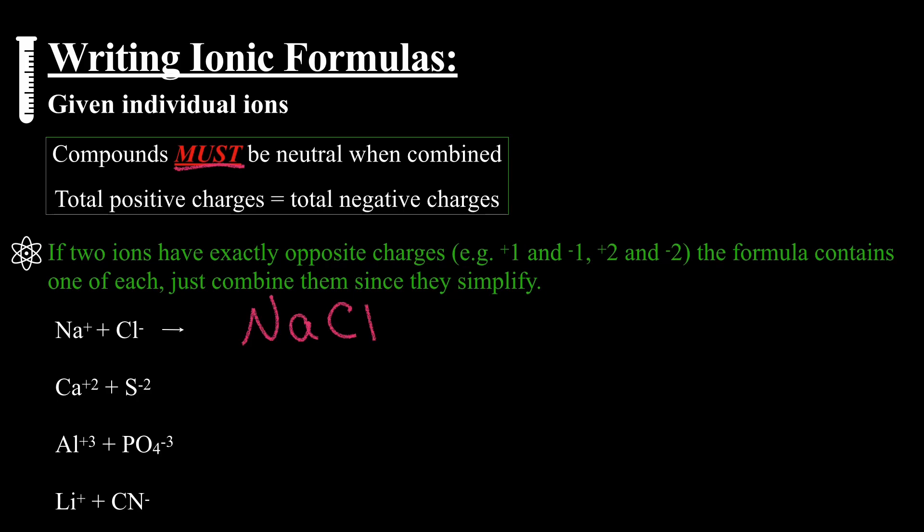Calcium plus two, sulfur negative two. When we cross those charges down, yes, the twos come down. We don't bring the sign, we just bring the number, but we're going to simplify them. So both those twos can be divided by two, and we're left with CaS.